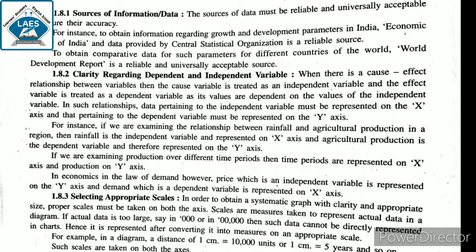In such a relationship, data pertaining to the independent variable must be represented on the x-axis. For example, if we are examining the relationship between rainfall and agricultural production in a particular area, the rainfall is our independent variable and agricultural production is our dependent variable. We will represent rainfall on the x-axis and agricultural production on the y-axis.